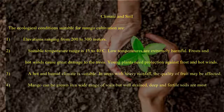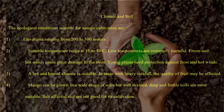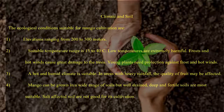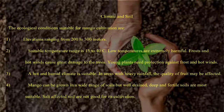The ecological conditions suitable for mango cultivation are: 1. Elevations ranging from 200 to 300 meters. 2. Suitable temperature ranges of 15 to 40°C. Extreme temperatures are harmful — frosts and hot winds cause great damage to the trees, and young plants need protection against frost and hot winds.